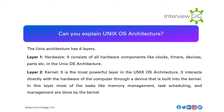Can you explain Unix OS architecture? The Unix architecture has four layers. Layer 1 — Hardware: it consists of all hardware components like clocks, timers, devices, ports, etc. in the Unix OS architecture. Layer 2 — Kernel: it is the most powerful layer in the Unix OS architecture; it interacts directly with the hardware of the computer through device drivers built into the kernel.